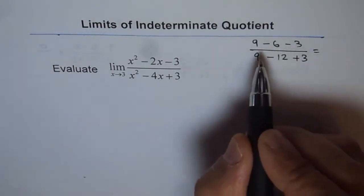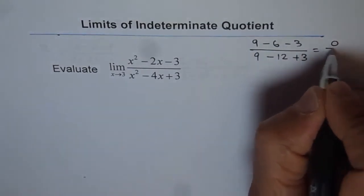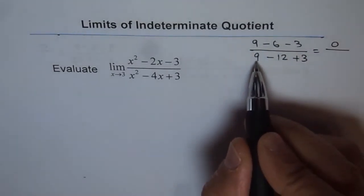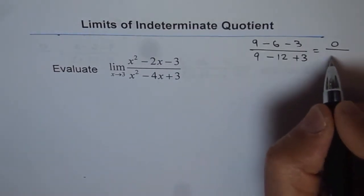Now in the numerator, we get 9 minus 6 is 3, 3 minus 3 is 0. Denominator, 9 minus 12 is minus 3, and minus 3 plus 3 is 0.